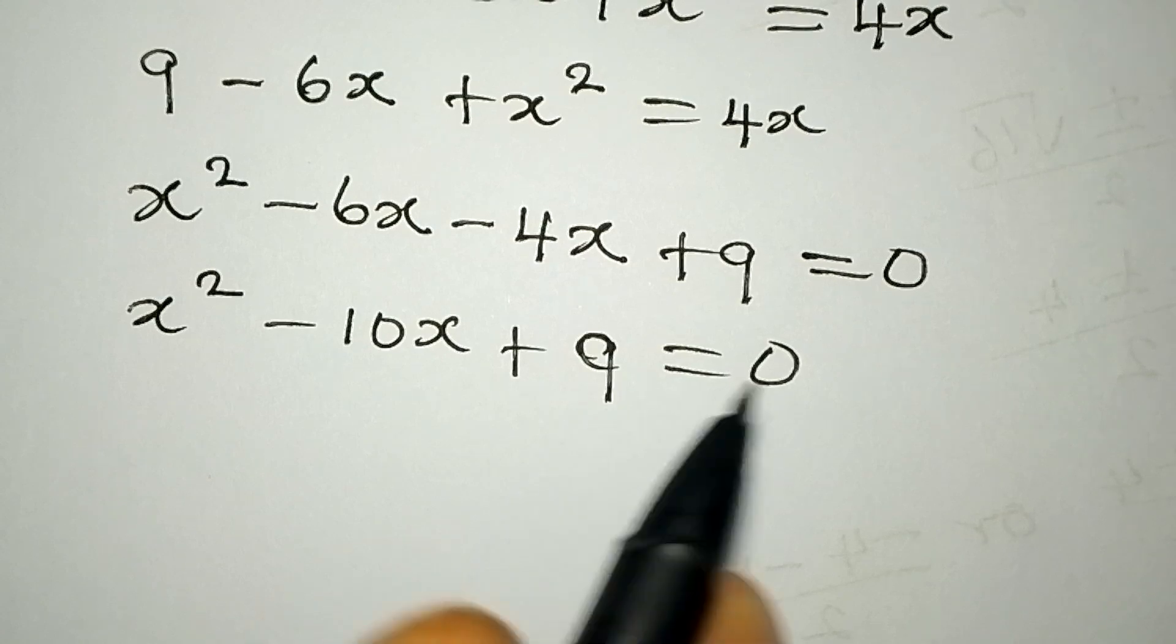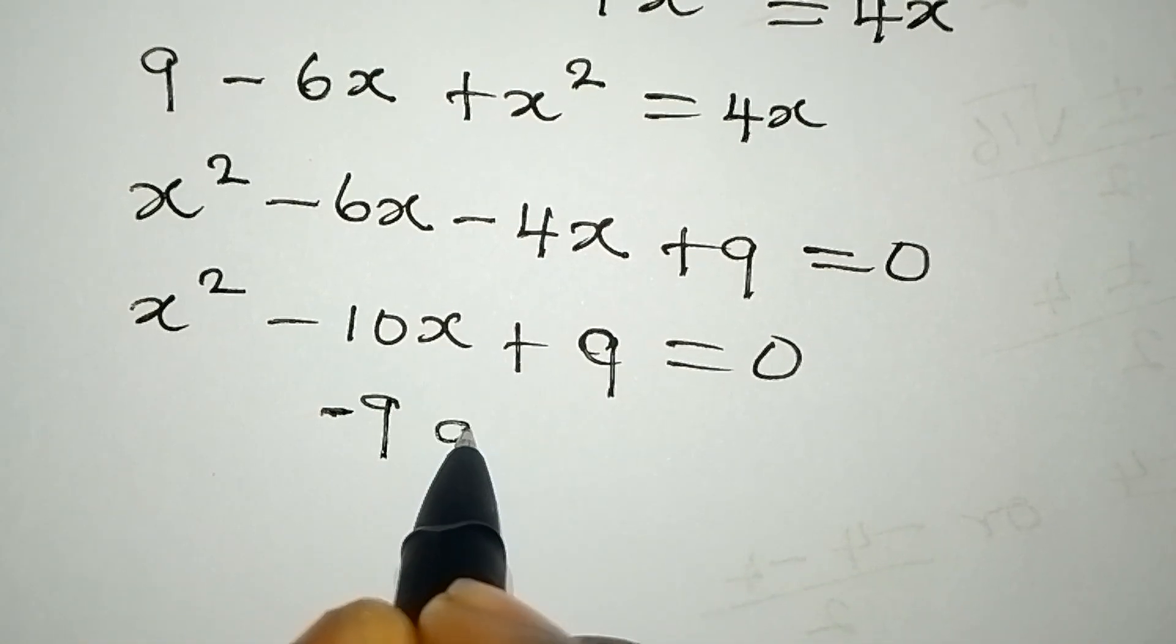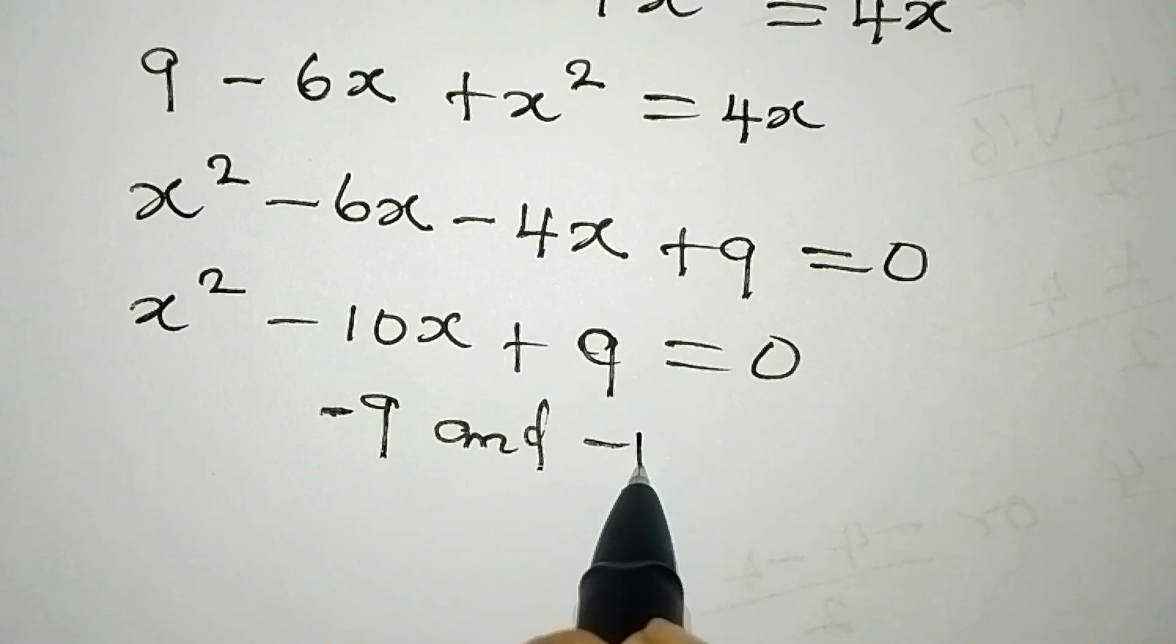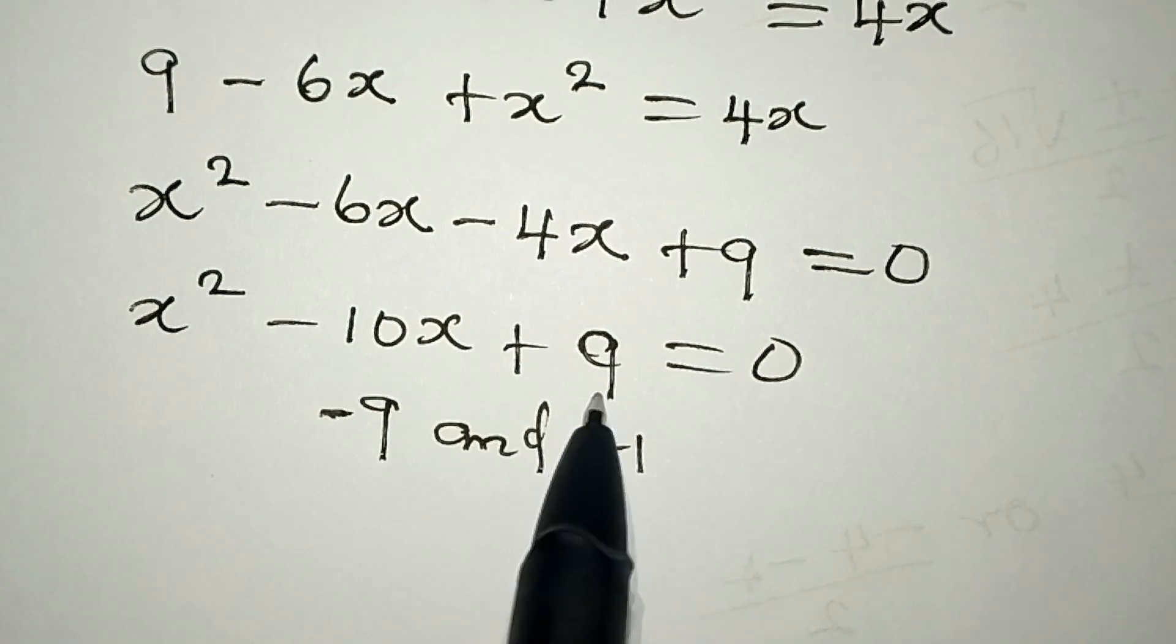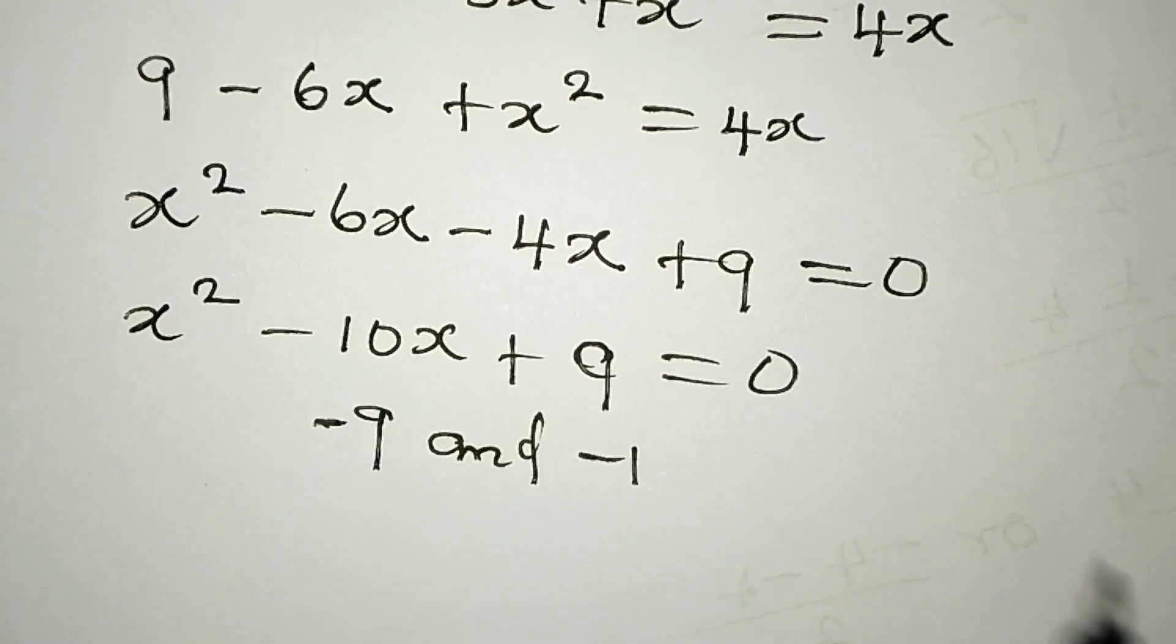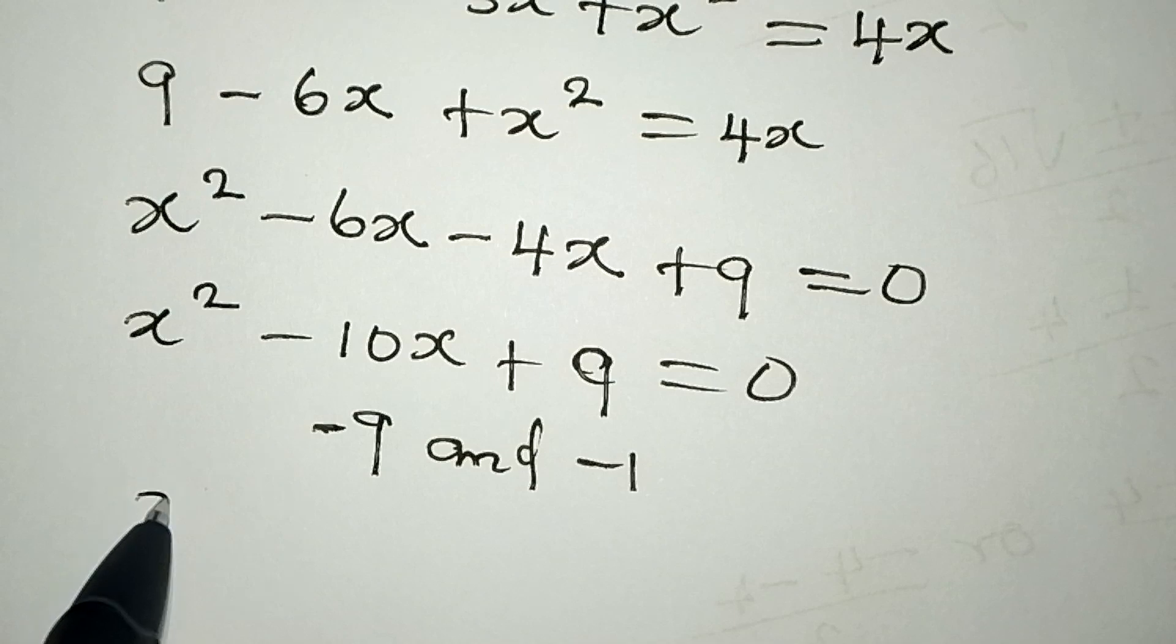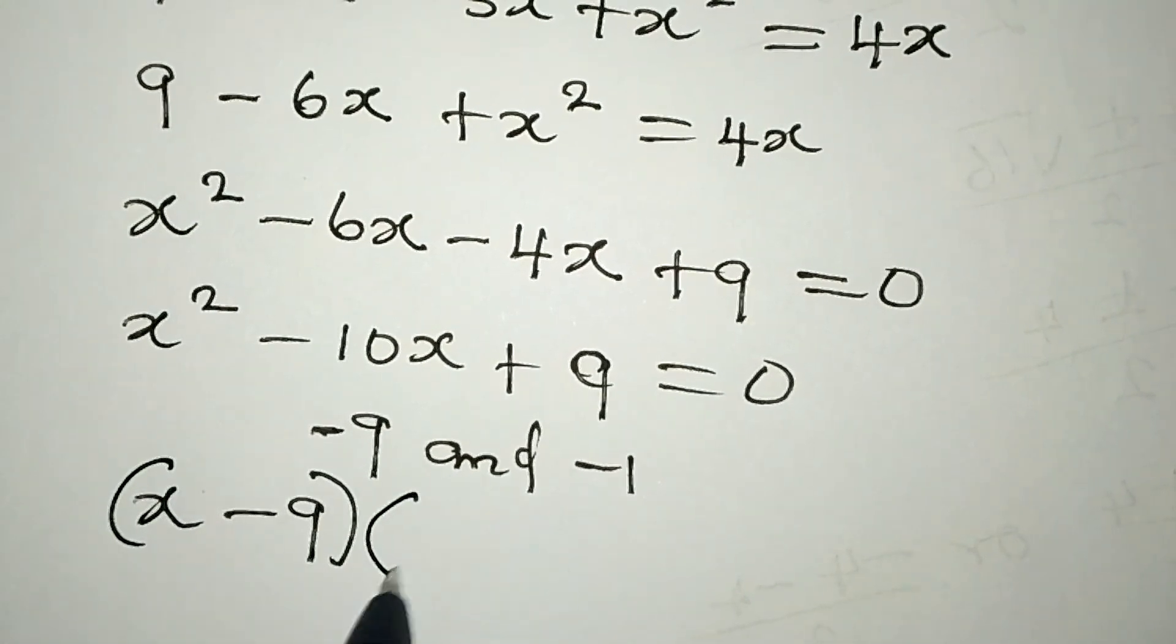two numbers that multiply to get 9: -9 and -1, because (-9) × (-1) = +9 and -9 + (-1) = -10. So the factors are (x - 9)